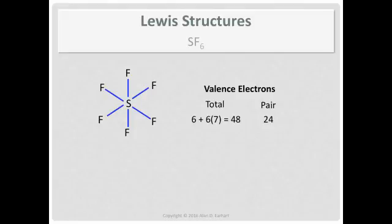What's the next rule? Follow the octet rule for the surrounding atoms. If we look at that bottom fluorine, it's already sharing one pair of electrons with sulfur. So we need to add three more to the fluorine. So that gives us four around that fluorine.